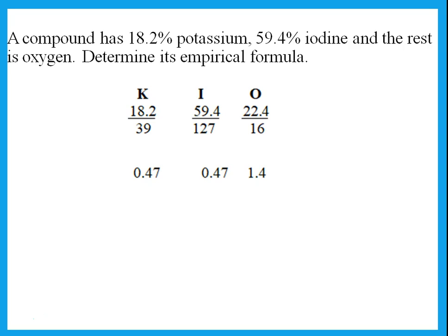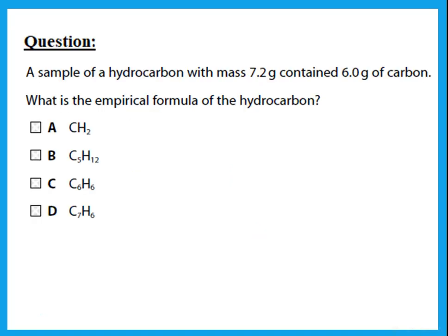After dividing, the results are approximately 0.47, 0.47, and 1.4. Step two: divide all values by the smallest, which is 0.47. This gives the simplest ratio. Round to whole numbers only if the decimal is 0.0, 0.1, or 0.9. The empirical formula comes out to KIO₃.